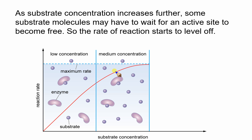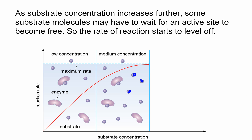Looking at the middle portion of the graph, the substrate concentration is increasing even more, meaning some substrates have to wait before an active site becomes free. So the rate begins to level off — it's not speeding up at the same pace as before. The enzymes are now much busier.